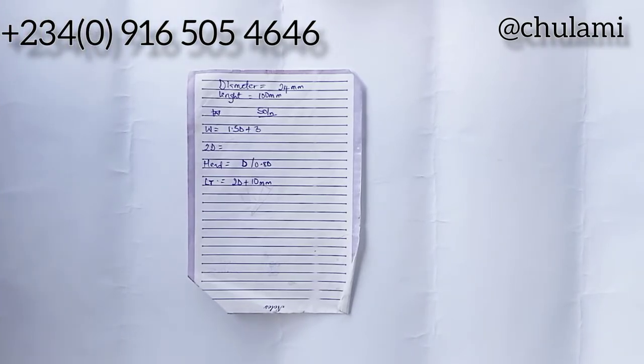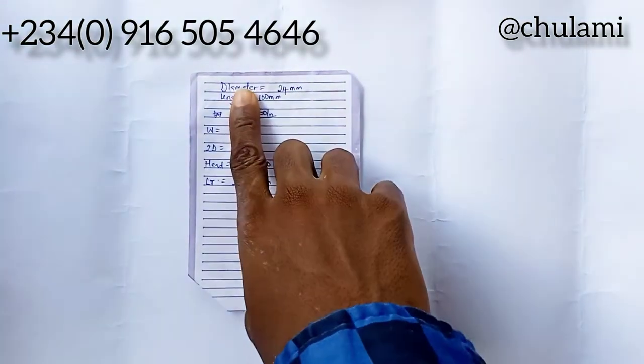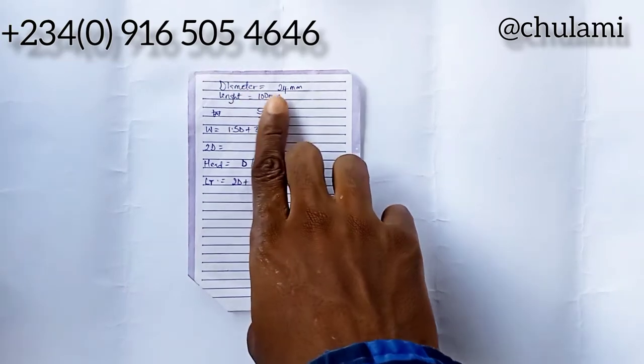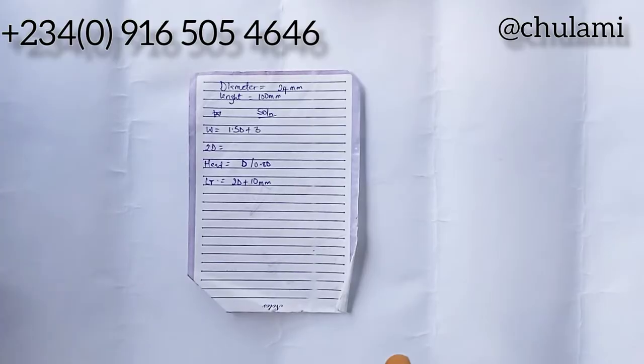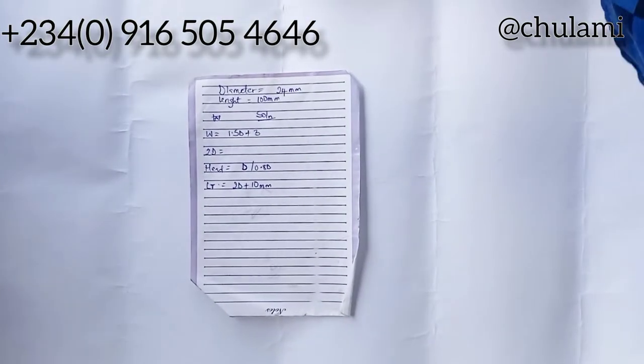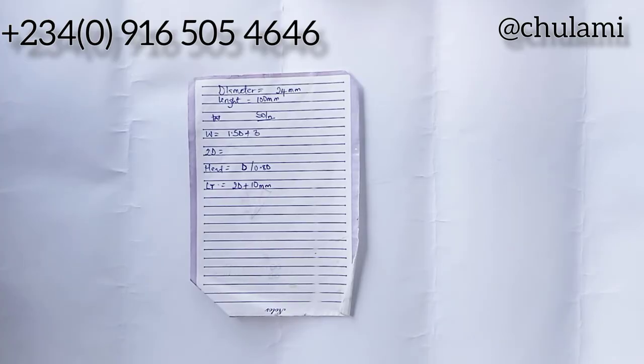To draw a hexagonal headed bolt we need different parameters. We're given from the equation that our diameter is equal to 24 millimeter and the length of our bolt is equal to 100 millimeter. With these two parameters we can draw.